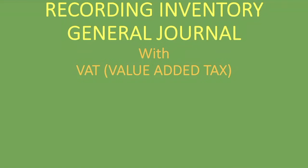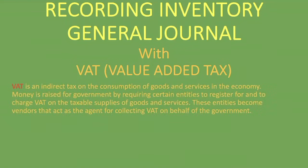So what is VAT? VAT is an indirect tax on the consumption of goods and services in the economy. Money is raised for government by requiring certain entities to register for and to charge VAT on the taxable supplies of goods and services. These entities become vendors that act as agents for collecting VAT on behalf of the government. VAT is charged over and above the selling price of a product.